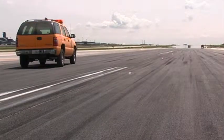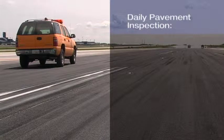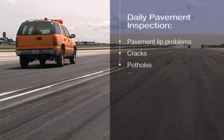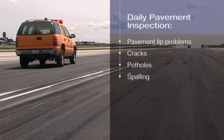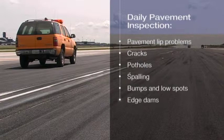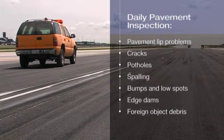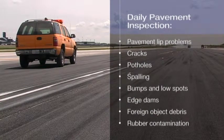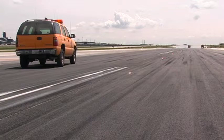In summary, the important things you should be concerned about during your daily pavement inspection include: improper lips that are more than 3 inches high; any cracks, because they could be the start of serious pavement problems; potholes, remembering that from little potholes bigger ones grow; breaking up of the pavement or spalling; low spots which can allow water to collect; edge dams created by vegetation along the side of the pavement; foreign object debris on runways, taxiways, and ramps; and finally rubber contamination — that slow buildup which can eventually make for obliterated markings and slippery runways. Knowing what to look for on or around the pavement can go a long way in making your operation a safe and efficient one.